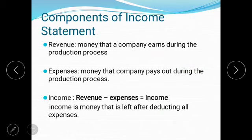Components of income statement. The first component shown in the flowchart is revenue — the money that a company earns during the production process. Revenue is generated by employing a lot of resources: human resources, material resources, information resources, and financial resources.